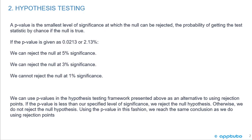We can use p-values in the hypothesis testing framework presented above as an alternative to using rejection points. If the p-value is less than our specified level of significance, we reject the null hypothesis.